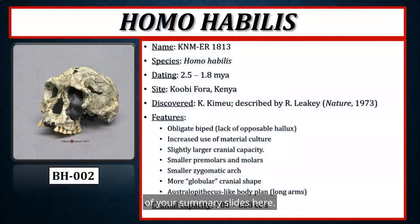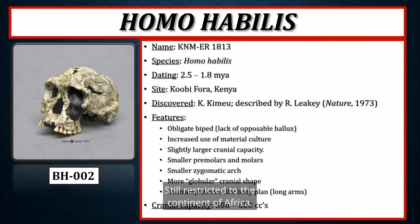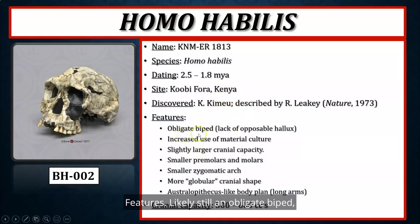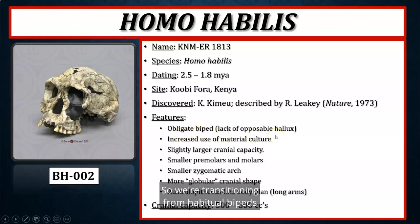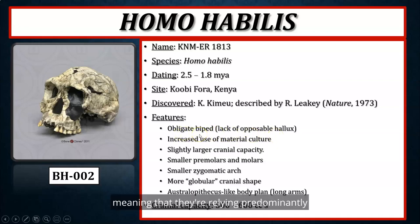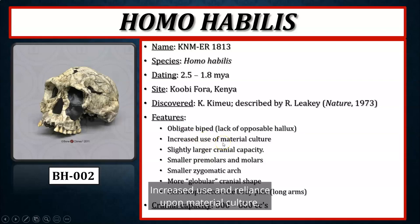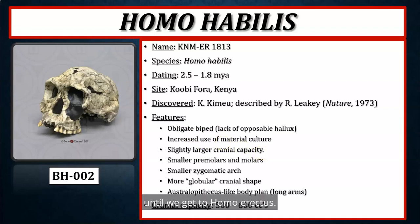On the summary slide, Homo habilis dates between about 2.5 to 1.8 million years ago, still restricted to the continent of Africa — this particular fossil was uncovered in Kenya. Homo habilis was likely an obligate biped due to the lack of the opposable hallux, transitioning from habitual to obligate bipeds and relying predominantly on bipedal locomotion. Cranial capacity is around 500 to 600 cc, but again, not a significant increase until Homo erectus.